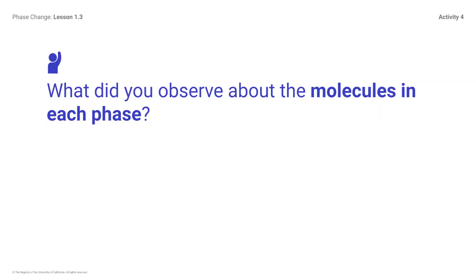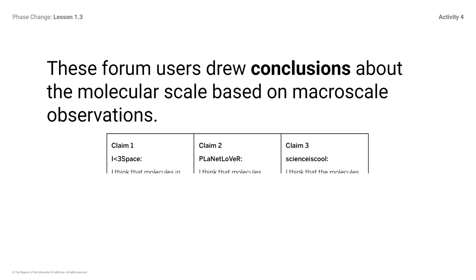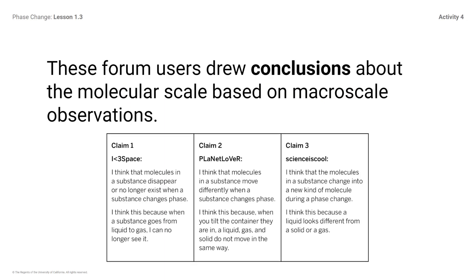What did you observe about the molecules in each phase? Did you notice? The molecules in a solid substance move in place. The molecules in a liquid substance move around each other. The molecules in a gas substance move away from each other. These forum users drew conclusions about the molecular scale based on macroscale observations. Gathering evidence at the molecular scale from the simulation will provide additional, stronger evidence about what happens to molecules during phase change.